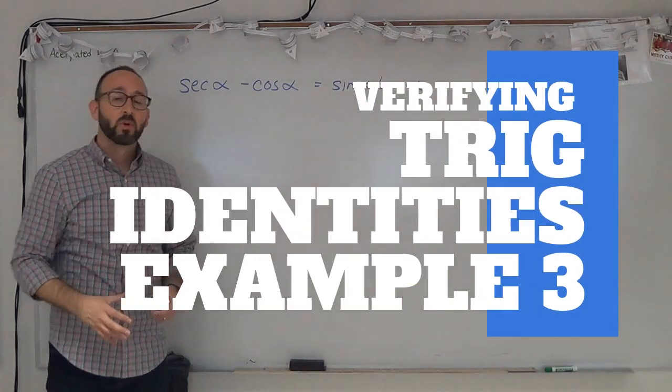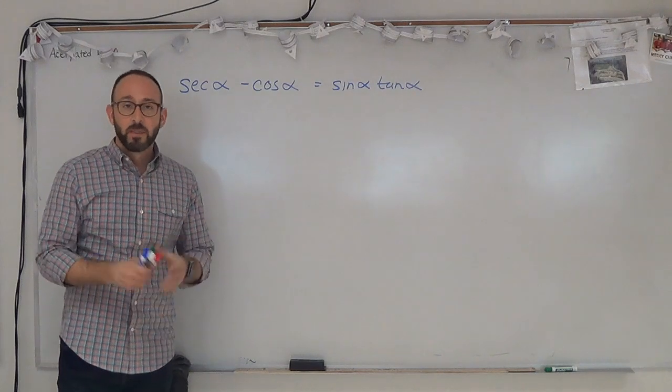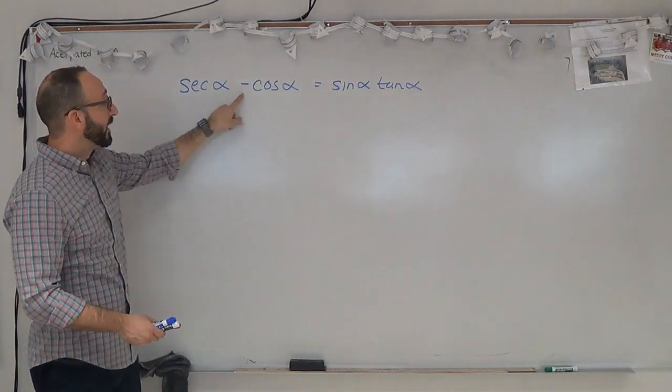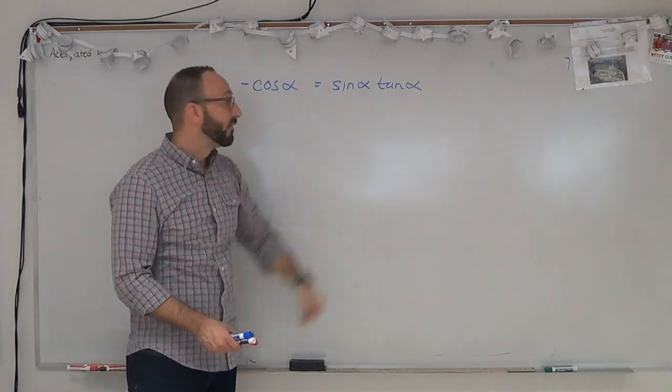Okay, we're back with our third example in a series of verifying trigonometric identities. The one that we're going to try to verify right now is secant alpha minus cosine alpha equals sine alpha times tan alpha.